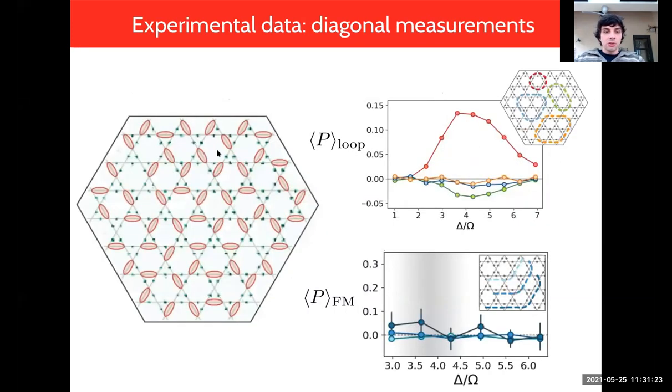Let me quickly show you some experimental results where we can probe these string orders. On the left I'm showing you a concrete readout of the experiment, the actual experimental configuration. We see that we get an effective dimer state in this particular region of parameter space. By taking many different snapshots you can calculate diagonal observables.